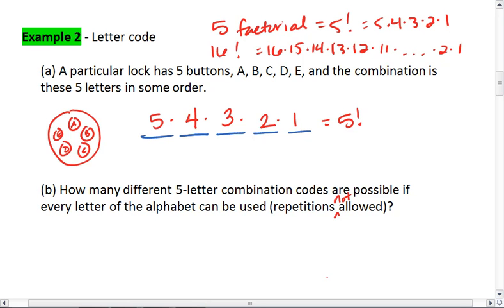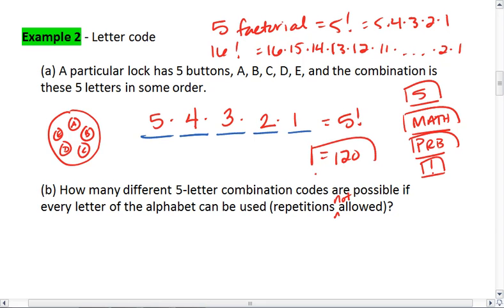Or, type in 5 on your calculator. Find the math button, it's the third one down on the left side. Scroll over to probability, then scroll down to the exclamation point and hit enter. This gives you 5 factorial, which equals 120 different combination possibilities.